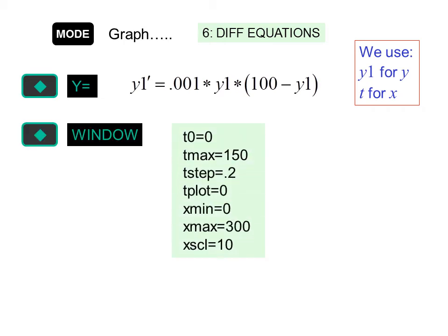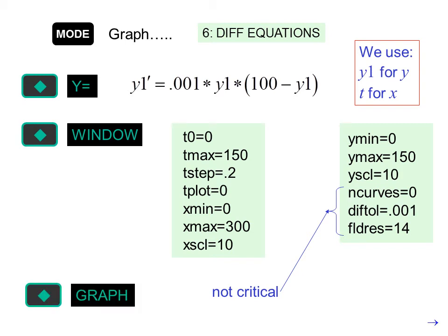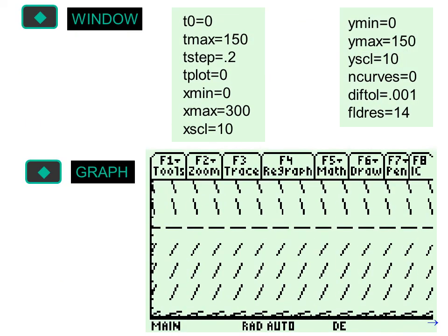Then press diamond window and set up our viewing window. The last three values are not critical. Then we press diamond graph. And we see our slope field.